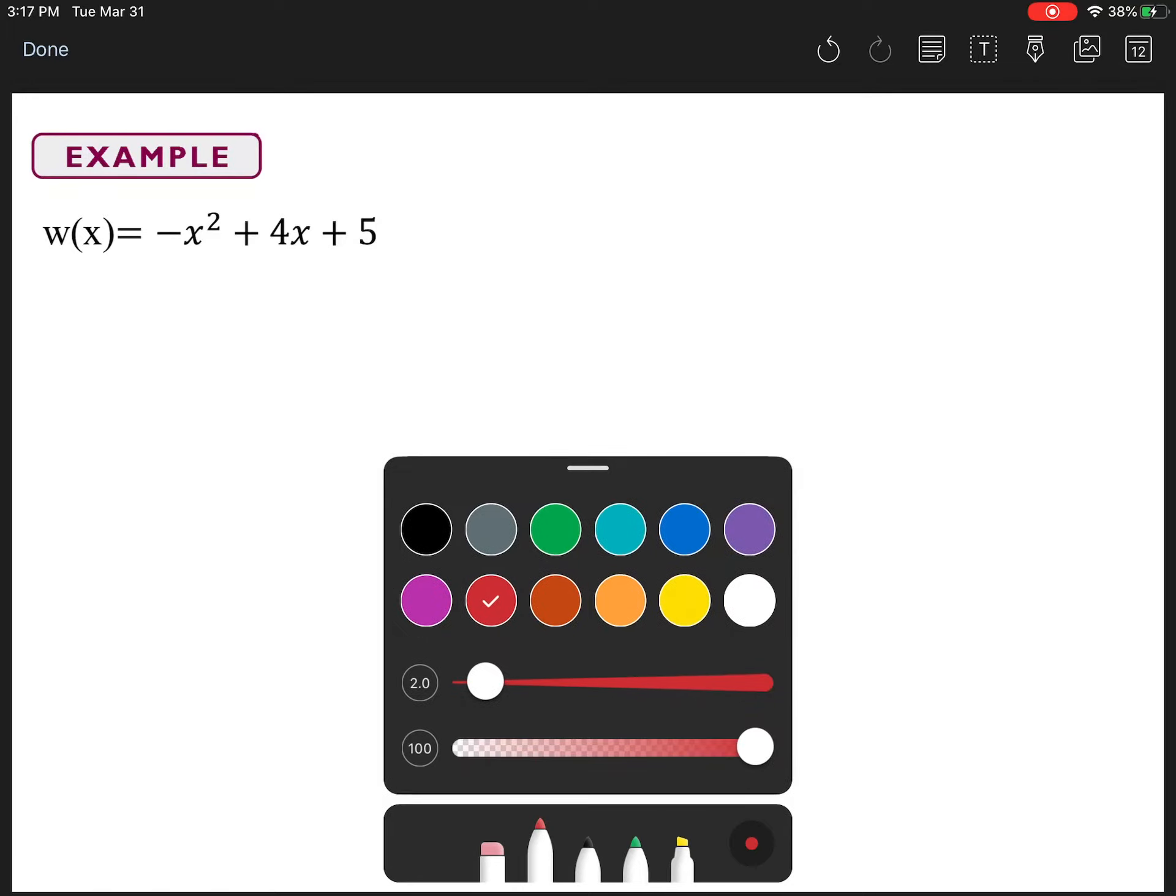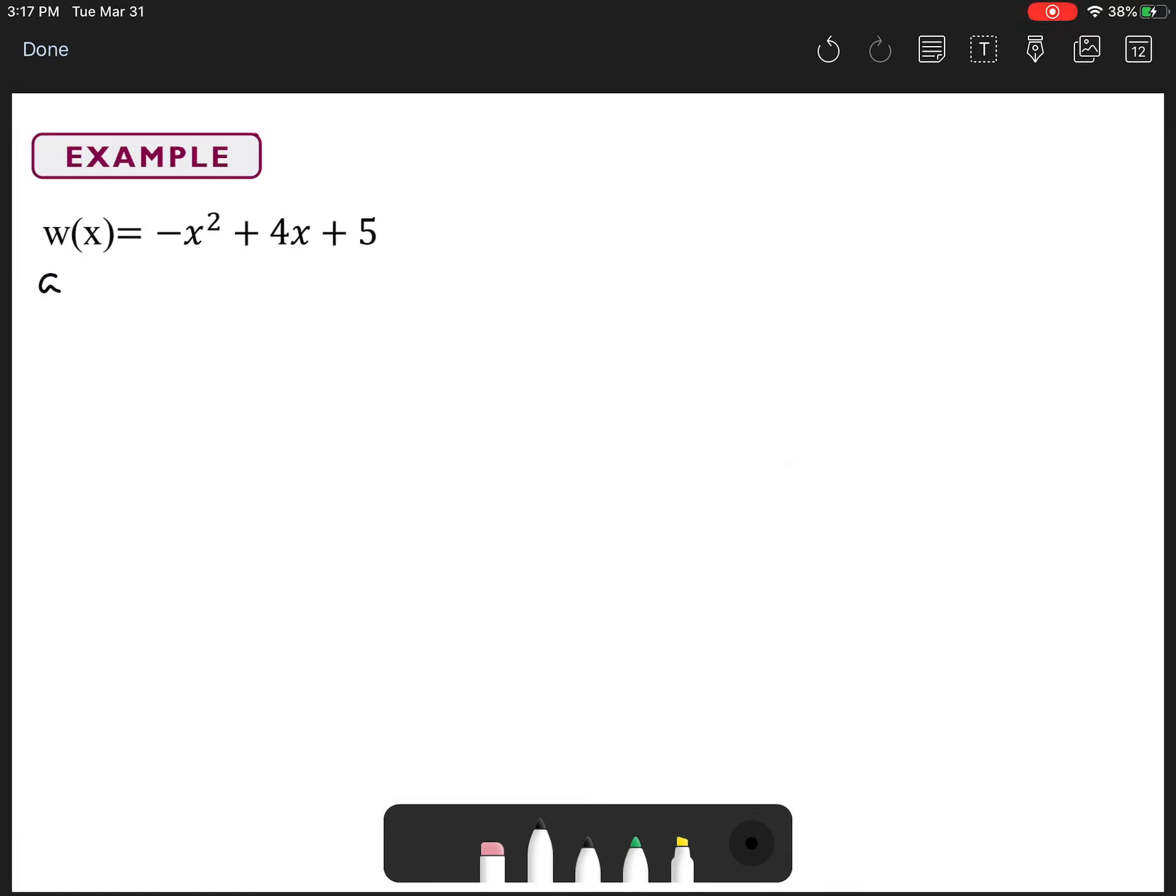All right. So, here we go. Part A says, does the graph open up or down? All right. So, up or down? We're going to look at the leading coefficient. The leading coefficient, we have A equals negative one. And we said, if A is negative, then the graph will open down. Down because A equals negative one. Now, part B asks, will you have a maximum or minimum? Again, if A is negative, then you're going to have a max.